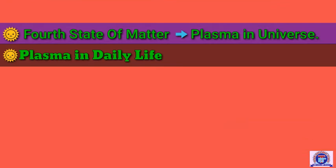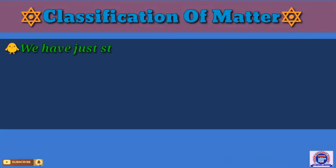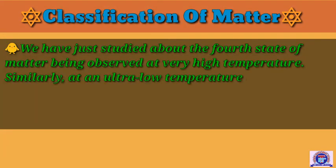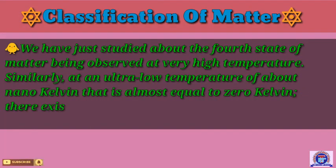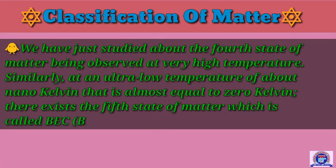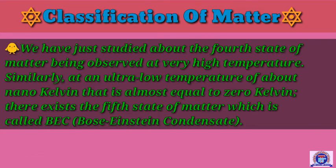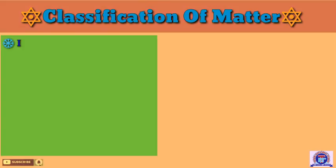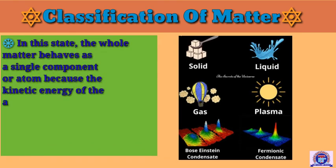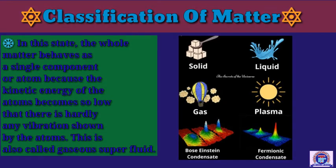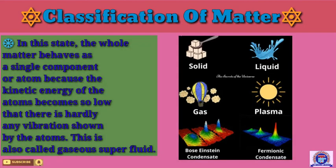We have just studied the fourth state of matter observed at very high temperature. Similarly, at an ultra-low temperature of about nano-Kelvin, which is almost equal to zero Kelvin, there exists the fifth state of matter called the Bose-Einstein condensate. In this state, the whole matter behaves as a single component or atom because the kinetic energy of the atoms becomes so low that there is hardly any vibration shown by the atoms. This is also called a gaseous superfluid.